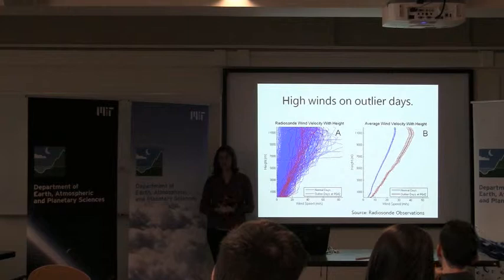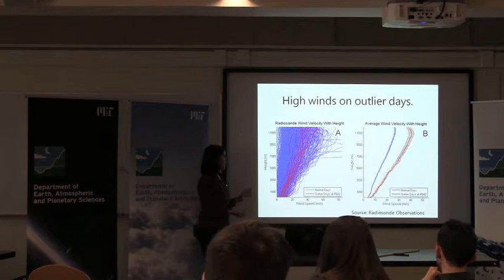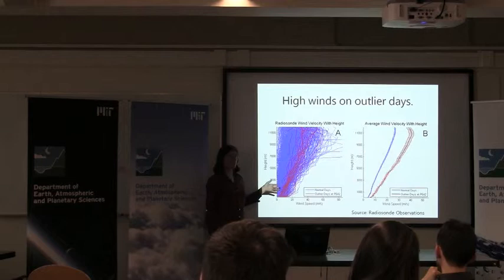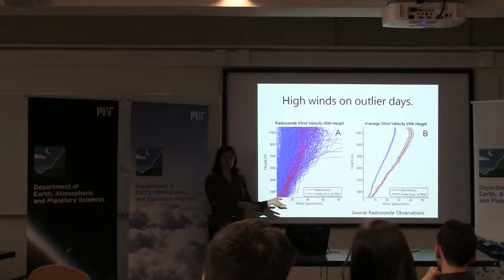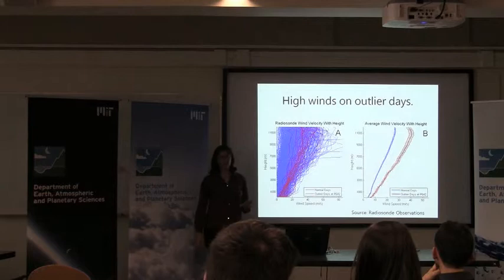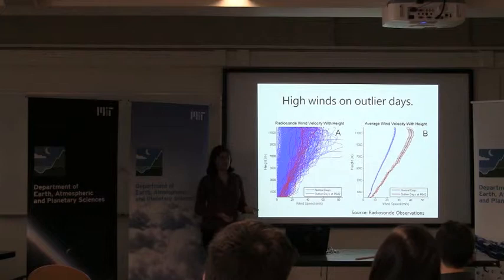I also used radiosonde data to examine vertical profiles of the atmosphere on particular days. This diagram shows wind speed as a function of height for every radiosonde deployed in 2012, color-coded into normal days versus outlier days at P642. Taking the mean of these two categories confirms what the weather model showed: on outlier days there is much higher wind speed than on a typical day.